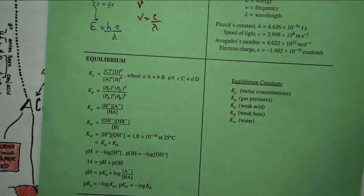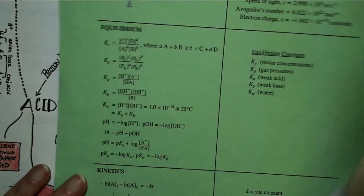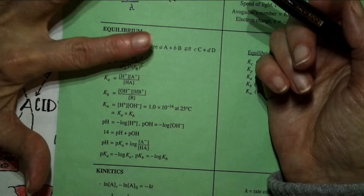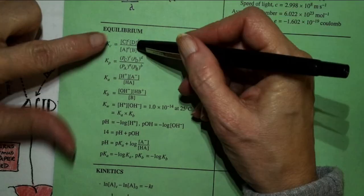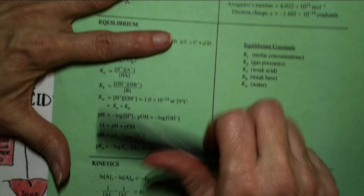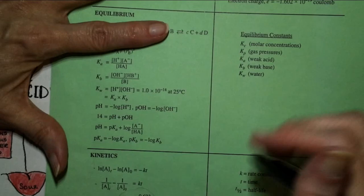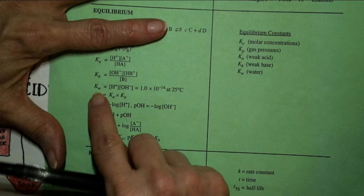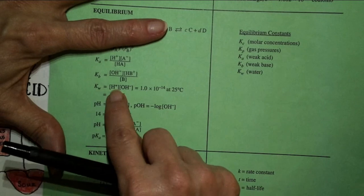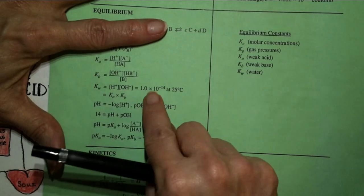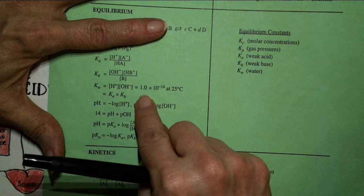So in this section, it's equilibrium. We already did the first two — Kc and Kp. All these other ones are dealing with acids and bases. Looking at Kw right here — the hydrogen ion concentration times the hydroxide ion concentration will always equal 1×10⁻¹⁴.